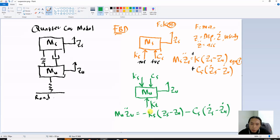And then upward plus Kt times with zu minus zr. So here the input is zr.